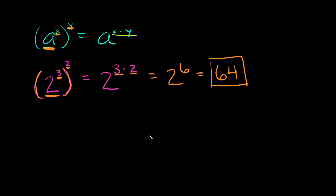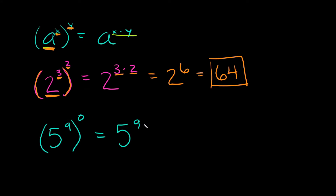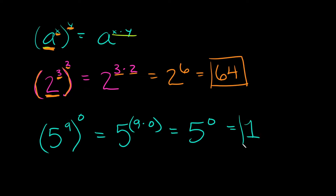Not too bad. Next example: five to the ninth power, with this whole thing raised to the zero power. This becomes five to the nine times zero, which equals five to the zero. And anything raised to the zero power is simply one.